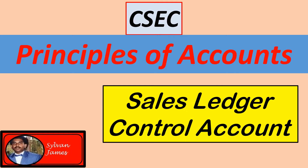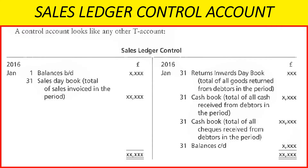Welcome to another Mr. James accounting tutorial. Today's topic is the sales ledger control account. In IGCSE/CXC, there are some things you have to memorize, some things you reason out, and some things you calculate. Control accounts is one of those things you have to memorize — specifically what goes on the debit side and what goes on the credit side.